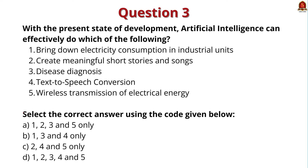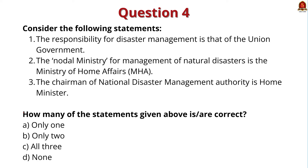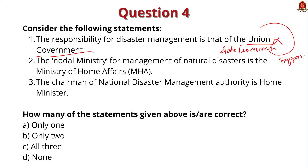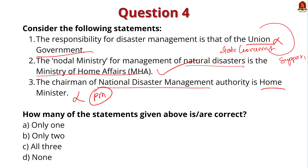For the question on disaster management: Statement 1 — the responsibility for disaster management is that of the Union Government — is incorrect, because the primary responsibility rests with the states, with the central government providing logistical and financial support. Statement 2 — the nodal ministry for management of natural disasters is the Ministry of Home Affairs — is correct. Statement 3 — the Chairman of the National Disaster Management Authority is the Home Minister — is incorrect, because the Chairman is the Prime Minister. Therefore, the answer is option B: only two statements are correct.